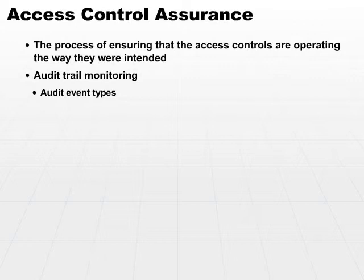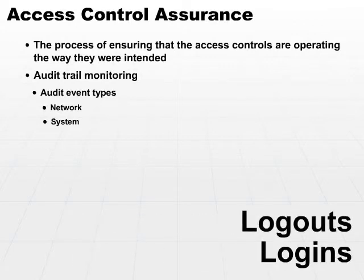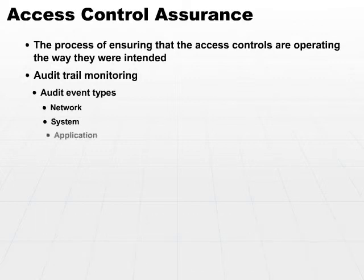Auditing is a large discussion topic because you can audit way more than you'll ever need and end up bogging your system down in the process. The different audit event types could include network events — any type of network activity that goes on in your system — system events on a specific system, anything that happens on that system, such as logins, logouts, any resource access. Within the system, you may have additional application logs where an application would log and audit activity that goes through its own processing tree.